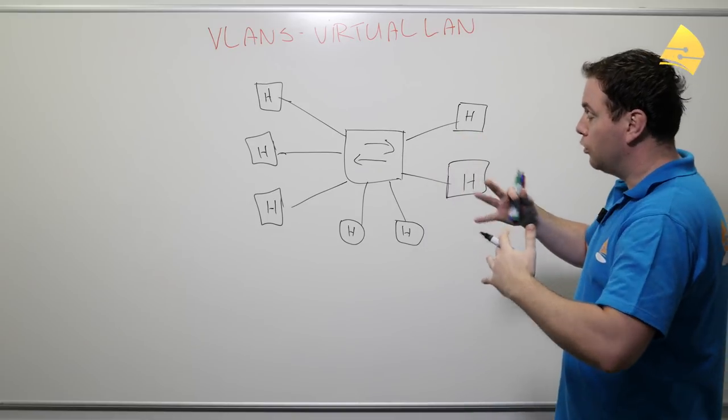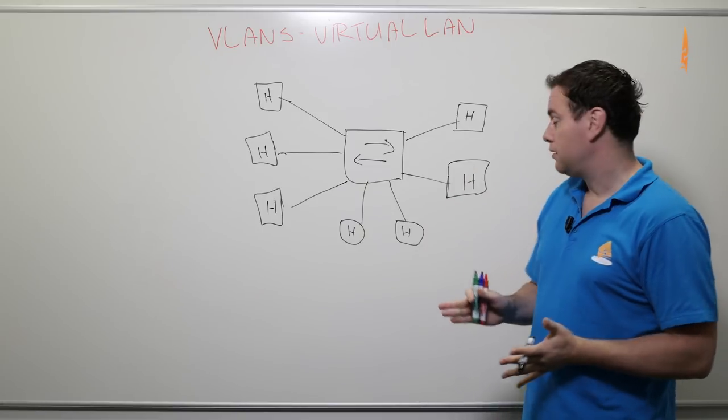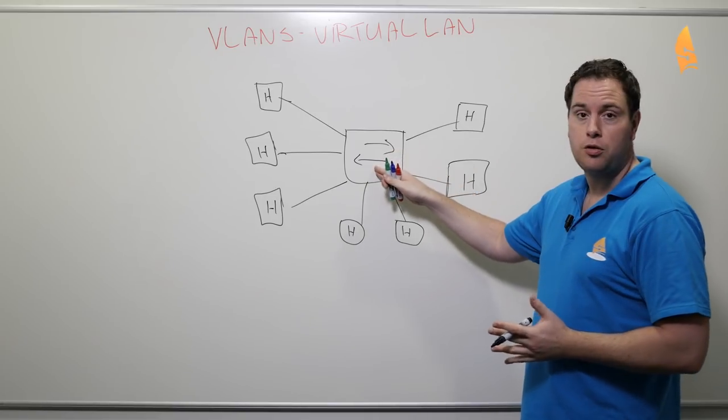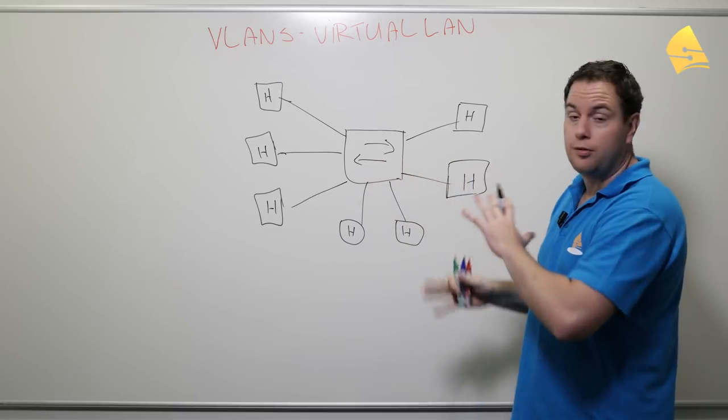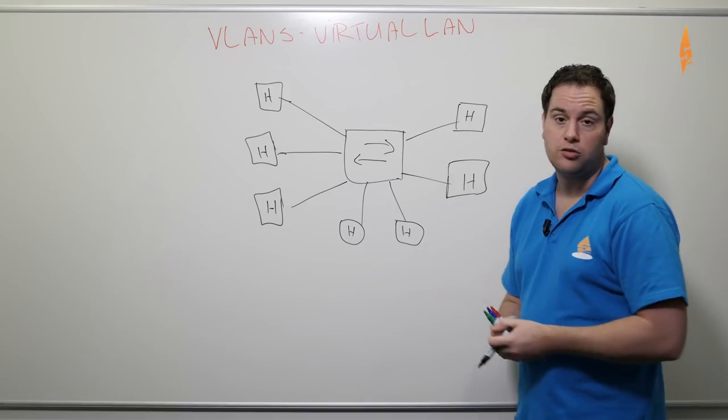Now normally all of these hosts will be able to communicate with each other. The switch will learn MAC addresses, and it will just forward the frames wherever they need to go, and all of the hosts will be able to talk to each other.